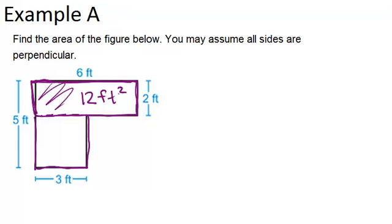For the other rectangle, I need to know both sides. I know that this is 3, but it's not clear what this is. I know that the full height is 5, so since this part right here is 2, because it's 2 on the other side, and opposite sides of rectangles are congruent, then this part must be 3 in order to make 5 total. So 2 plus 3 makes the 5.